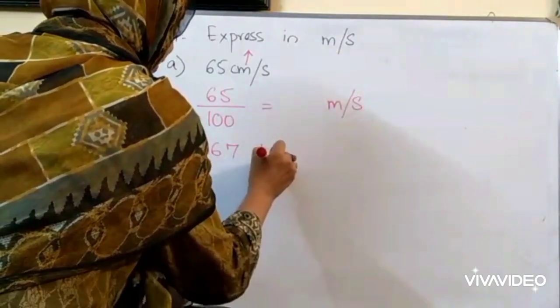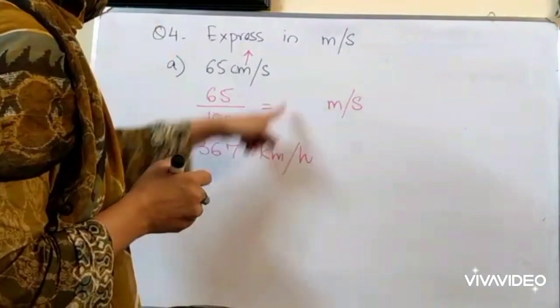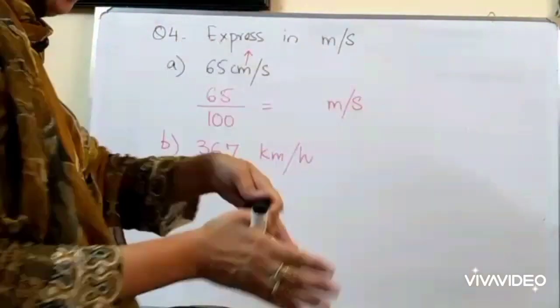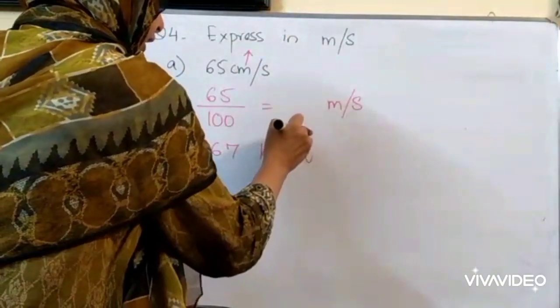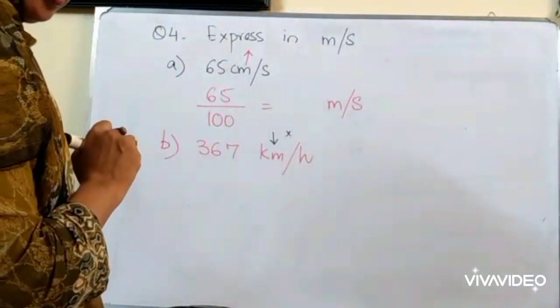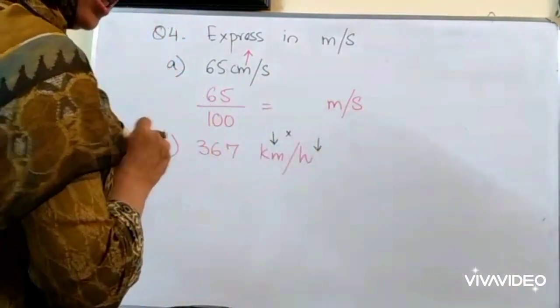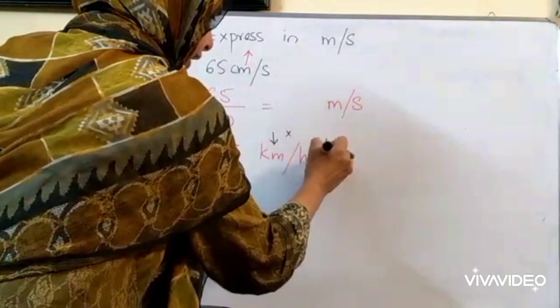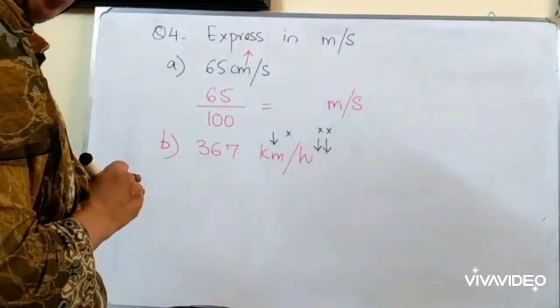367 kilometers per hour. Kilometers have to be converted into meters. We have to go downward. From big value to small value. One time. It means we will be doing multiplication. Hours will be converted into minutes first. And then into seconds. So, we will be doing multiplication for this case also.